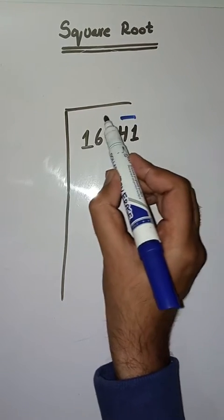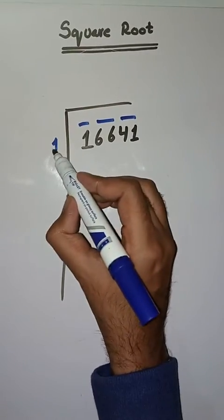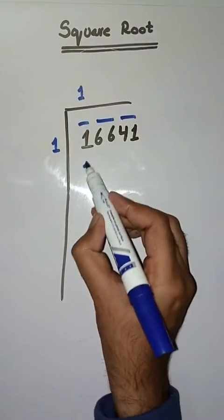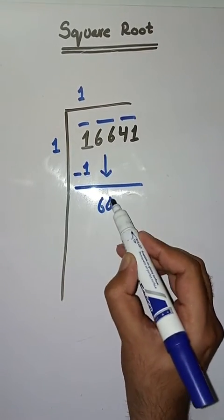Like this: 41, 66, and 1. So first we have to solve 1. We take number 1. One times one is one. Subtract, we get zero. Next pair is 66. We bring it down. We do 1 plus 1 which is equal to 2.